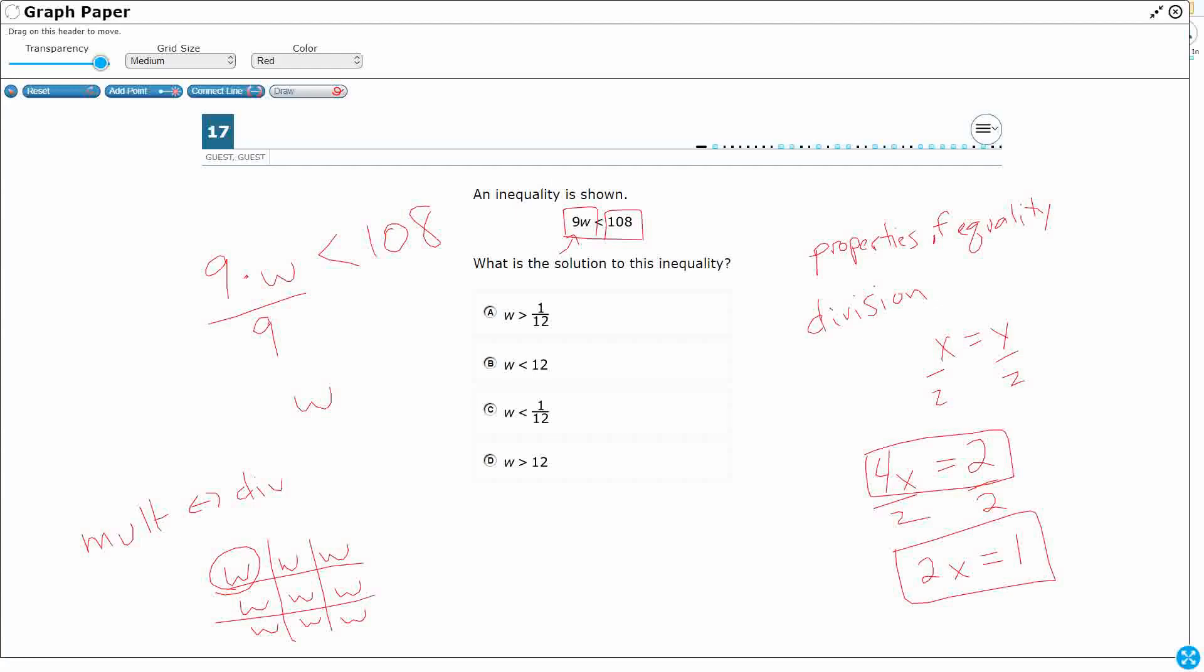Well, just a W. I finally have my W by itself. But you can't just do that to one side of the equation. The division property of equality says you have to divide both sides by 9, okay? So now I need to take my 108, right? And I need to divide that by 9.